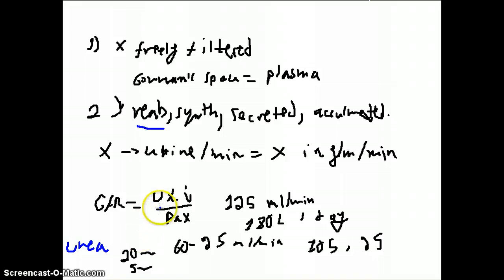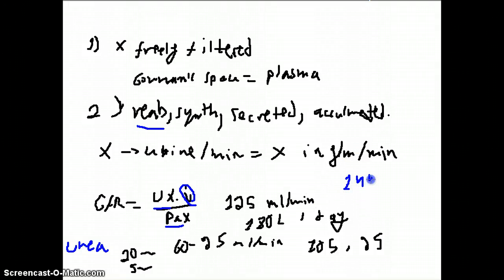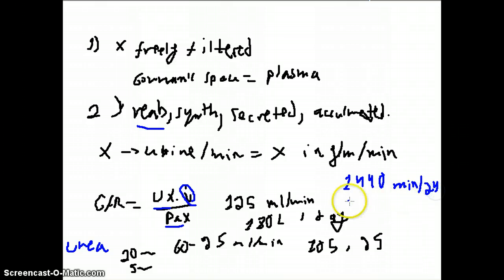These clearance values are measured in milliliters per minute. Keep in mind that sometimes you may have diuresis data given per 24 hours, so you need to divide by 1,440 — that is the number of minutes in 24 hours — to convert to milliliters per minute.